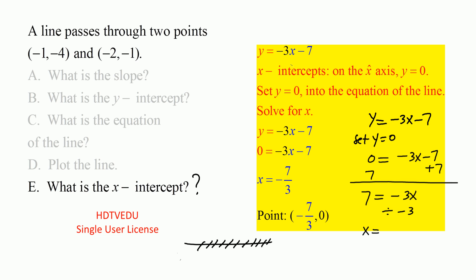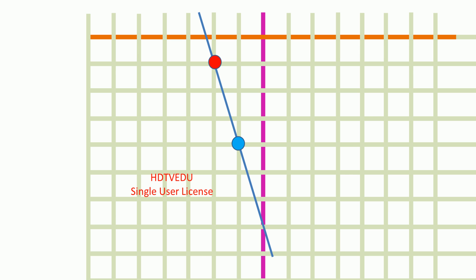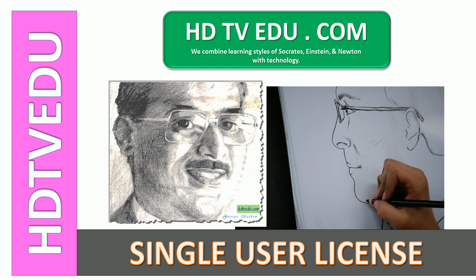Divide both sides by negative 3 and you get x equals 7 over negative 3, which is the same as negative 7 over 3, and that is roughly negative 2.33. So the x-intercept point is (negative 2.33, 0) or (negative 7 over 3, 0). This makes sense because from the graph negative 2.33 falls between negative 2 and negative 3. This is George Matthew signing off — good luck!